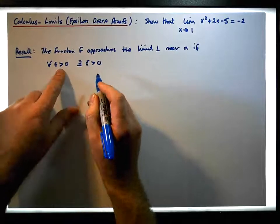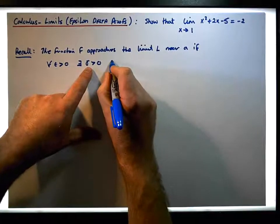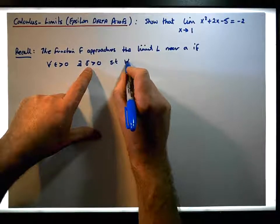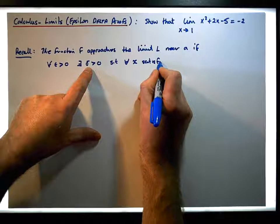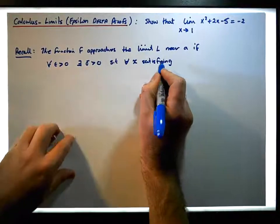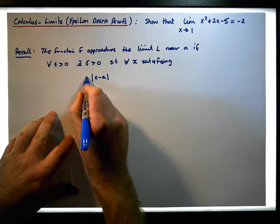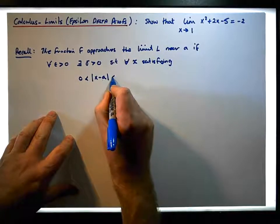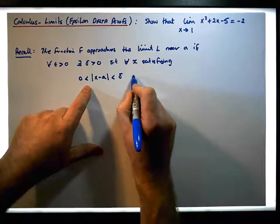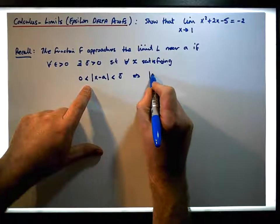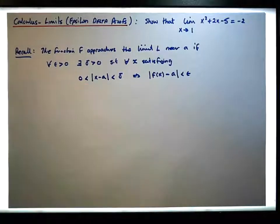So someone gives us an epsilon greater than 0, we need to find a delta greater than 0, such that for each and every x satisfying the condition that the absolute value of x minus a is greater than 0 and less than delta, this implies that the absolute value of f(x) minus L is less than epsilon.